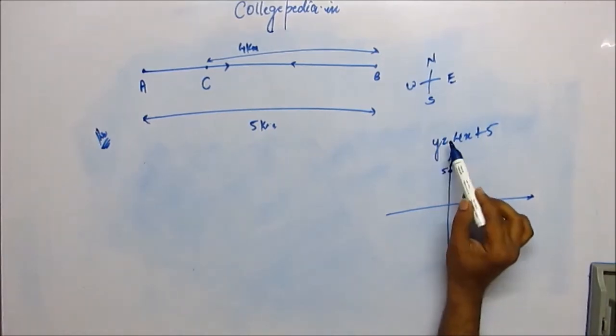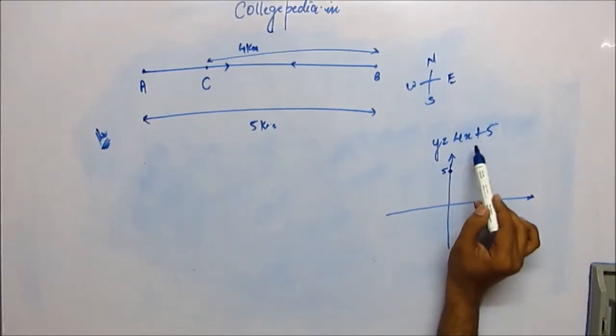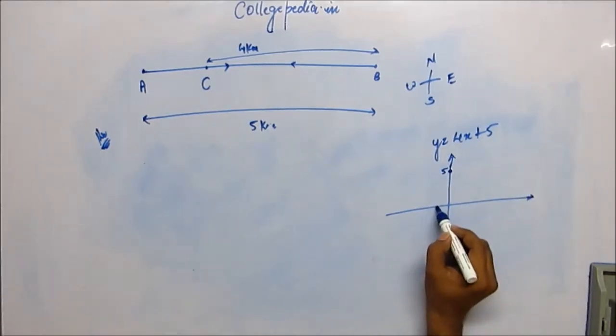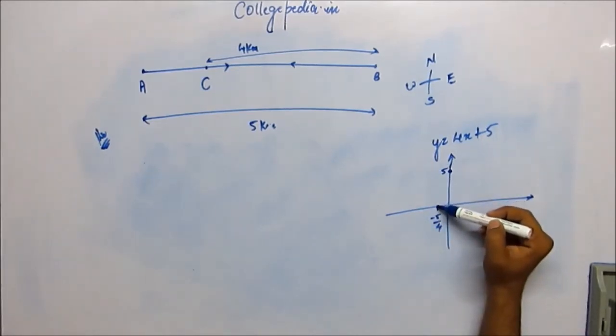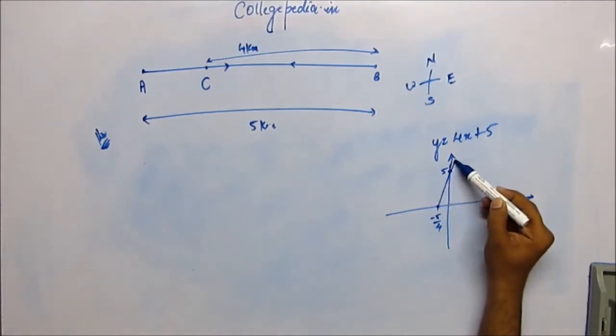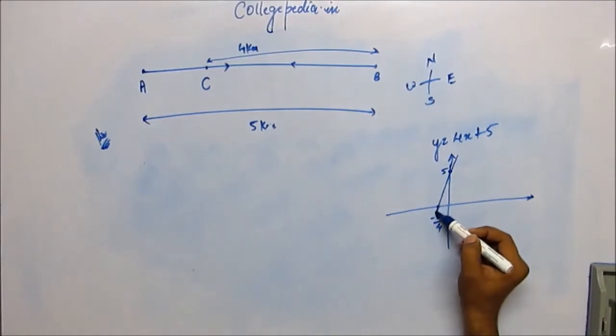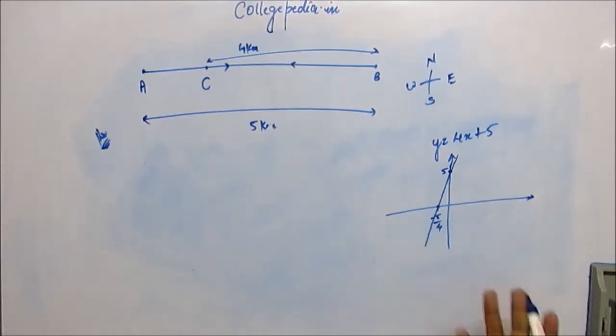Then think of y to be 0, then x will turn out to be minus 5 by 4. So these are the two points lying on the graph. You join these two points and extend the line back and forward and you have plotted the graph.